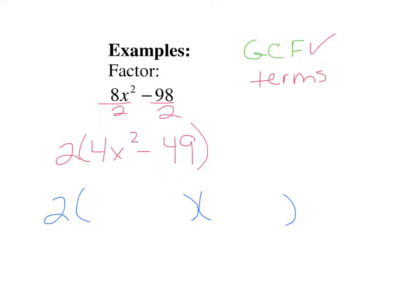So to factor the difference of squares, we take the square root of each term. The square root of 4x squared is 2x. The square root of 49 is 7. And the difference of squares has 1 plus 1 minus. And that's it. Then you're done.